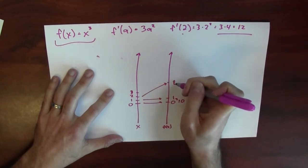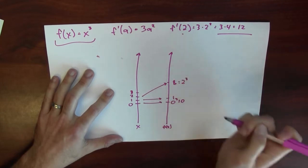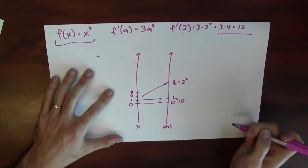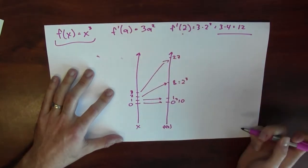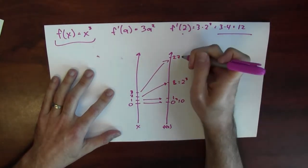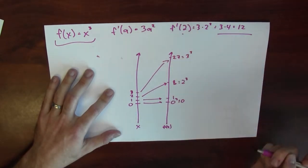But 2, 2 cubed is 8. 2 times 2 times 2, that's 8. And 3 cubed, way up here say at 27. That's 3 cubed.